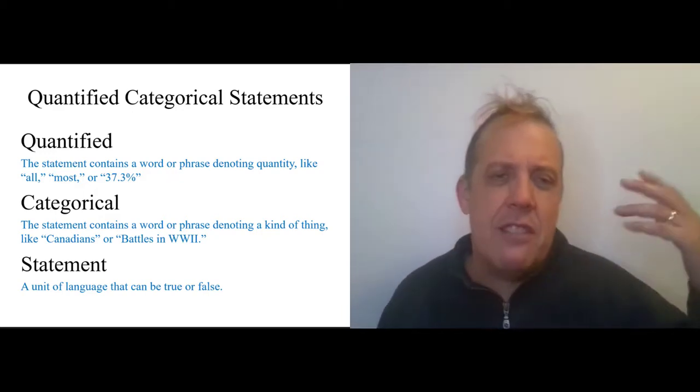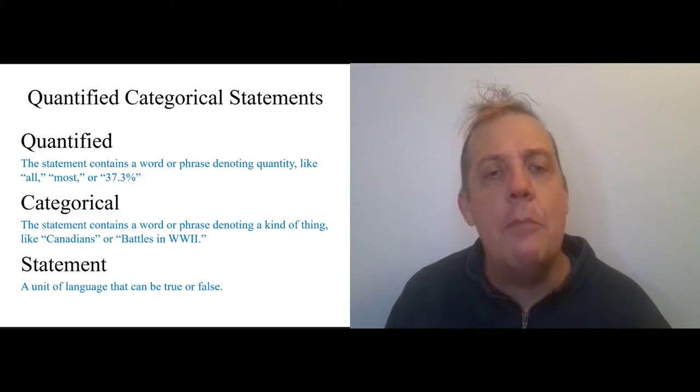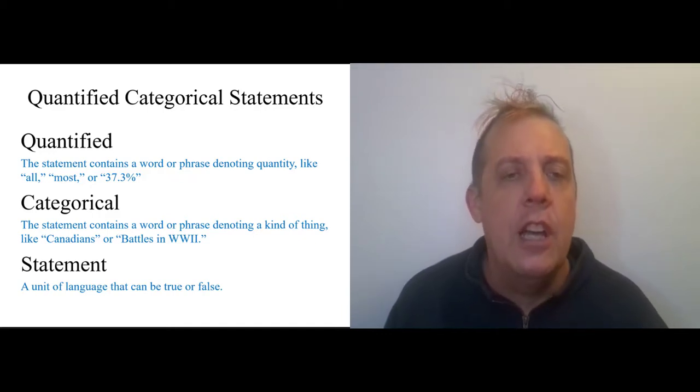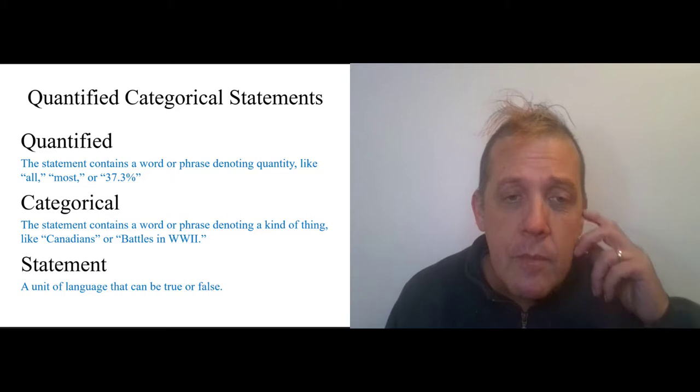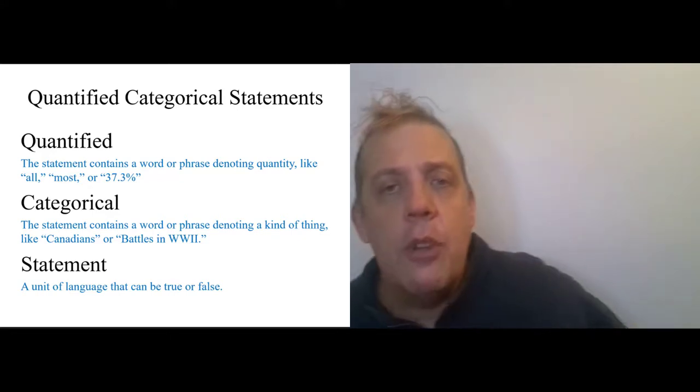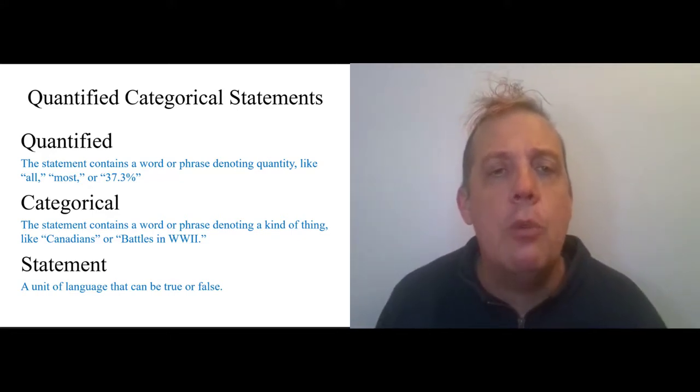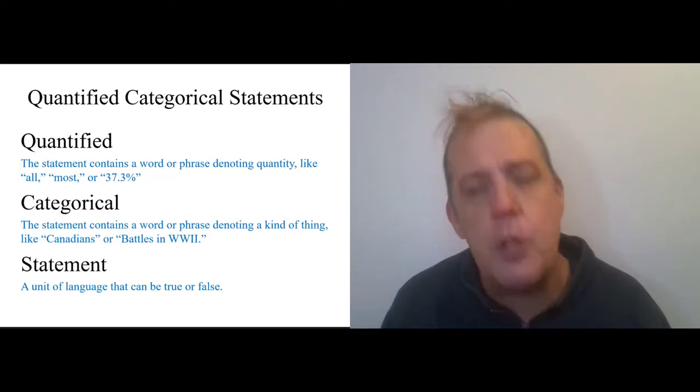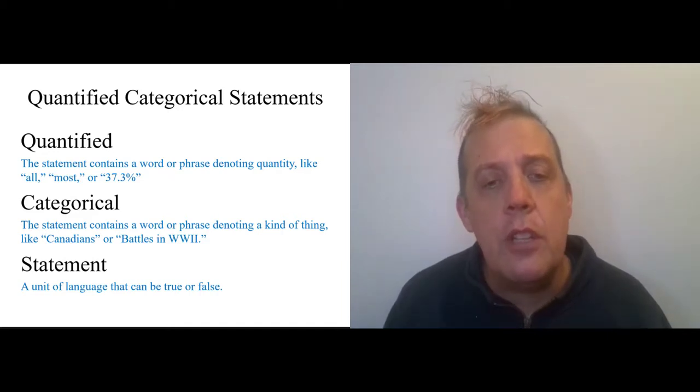A quantified categorical statement is just a statement that has two categories and a quantifier. It's quantified, meaning it contains a word or phrase denoting number or quantity. This could be a precise number like 37.3 or something vague like all, most, some. They're going to be categorical: the statement contains a word or phrase denoting a kind of thing, like Canadians or battles in World War II. And finally, the statement is a unit of language that can be true or false.